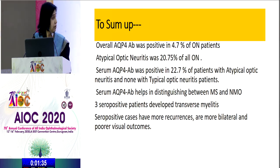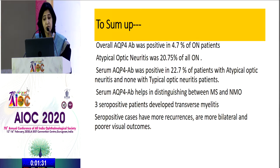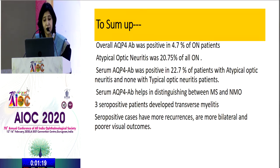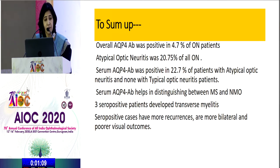To sum up: overall, aquaporin-4 antibody was positive in 4.7% of all patients. Atypical optic neuritis was seen in 20.7% of all patients. Serum aquaporin-4 antibody was positive in 22.7% of patients with atypical optic neuritis and none with typical optic neuritis. Seropositivity helps in distinguishing between MS and NMO. Three seropositive patients developed transverse myelitis. Seropositive cases have more recurrences, are more bilateral, and have poorer visual outcomes.